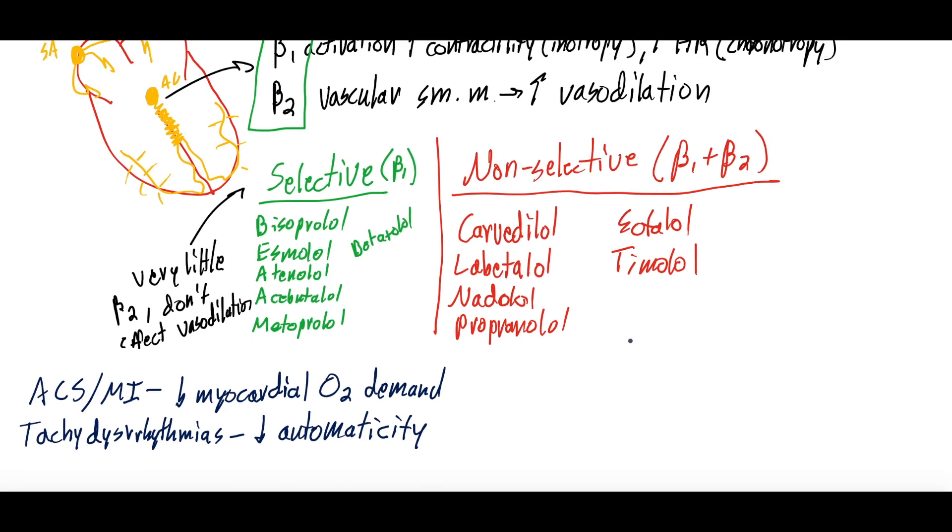They're used in heart failure as well because they prevent myocardial remodeling. And then although they're not your first or second or really third line drug, sometimes they're started for hypertension, specifically the non-selective since they also can affect peripheral blood vessels.